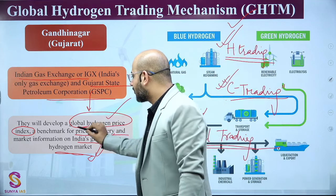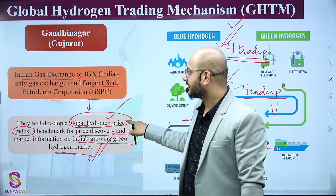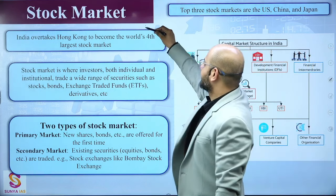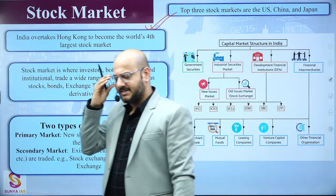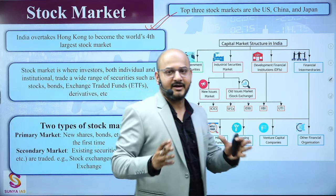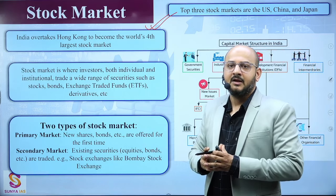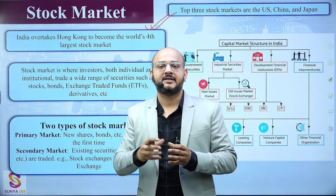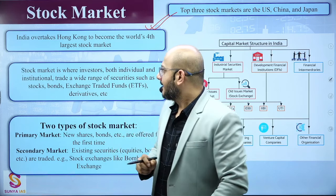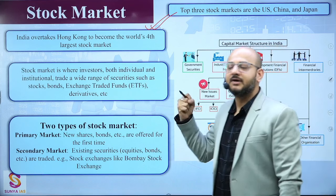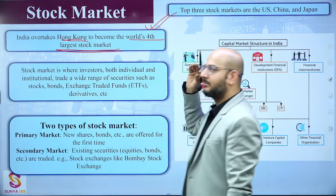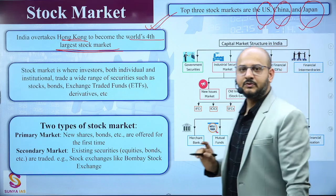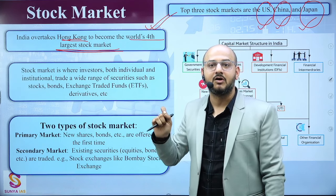To clarify: it is not a national but a Global Hydrogen Price Index, being developed by the Indian Gas Exchange — India's only gas exchange — and Gujarat State Petroleum Corporation. On the stock market front, India has overtaken Hong Kong to become the world's fourth-largest stock market. The top three are the US, China, and Japan. India becoming fourth by overtaking Hong Kong is very big news.